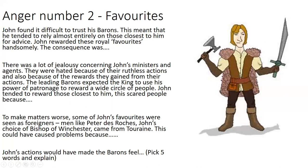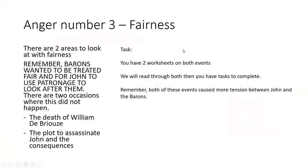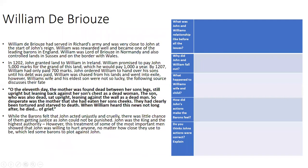The third F is Fairness. Barons wanted to be treated fairly and for John to use patronage to look after them. There are two key occasions where John failed to show fairness: the death of William de Brouz, and the plot to assassinate John in 1212.